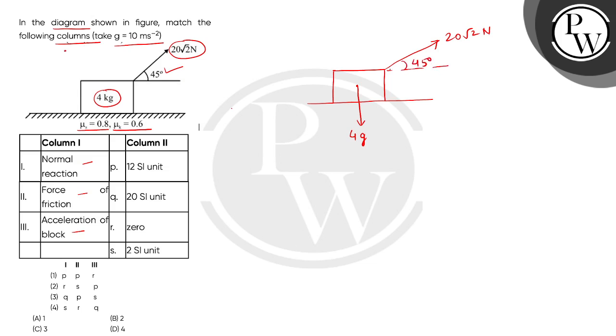We will break it into two components. First is the horizontal component, which is 20 square root 2 cos 45 degrees. Now cos 45 degrees and sin 45 degrees both values are 1 by square root 2, so this will come to 20 newton. Similarly, the vertical component, which is also 20 square root 2 sin 45 degrees, will also be 20 newton.